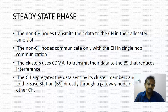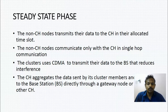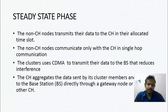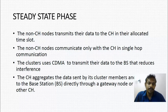In the steady state phase, the non-cluster nodes transmit their data to the cluster head in their allocated time slot to prevent interference. The clusters follow CDMA to transmit the data, which reduces interference. The cluster head aggregates all the collected data from the cluster members and transmits it to the centralized base station through a gateway node.